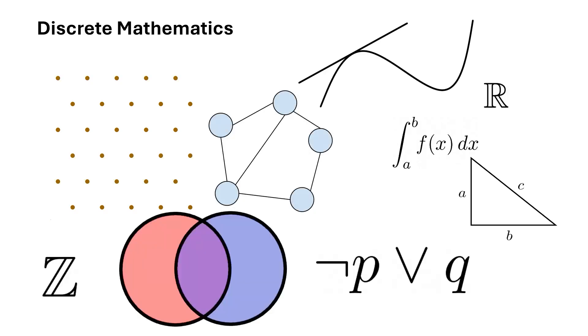Discrete objects can usually be enumerated with the integers, and so deals most often with countable sets, but this isn't all-inclusive of discrete mathematics.